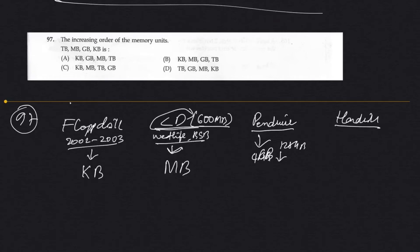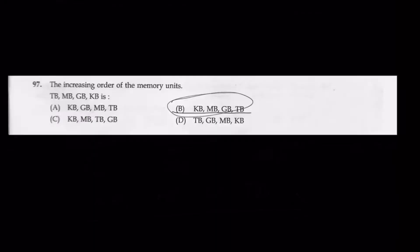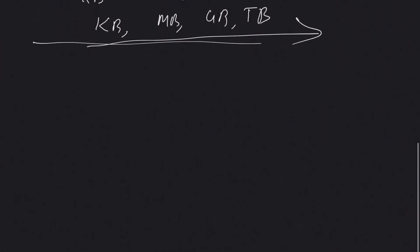Then hard disk, hard disk is 5TB or 2TB. So memory KB, MB, GB and TB, this increases, becomes bigger and bigger. So the answer is the increasing order will be which option: KB, MB, GB, TB, which is option B. So this is how we solve this answer.